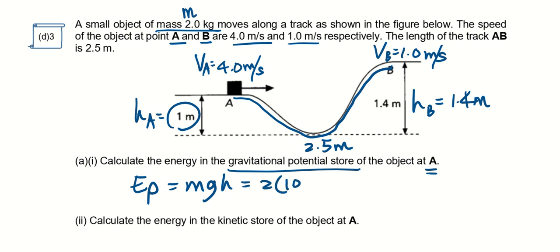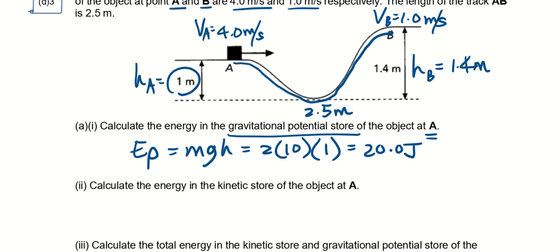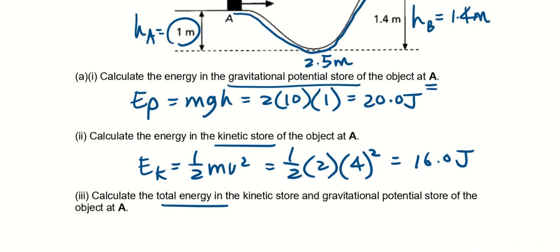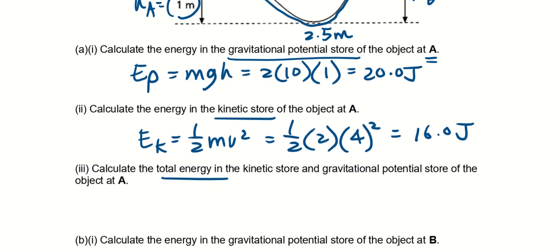Calculate energy in the kinetic store of the object at A, so Ek equals half mv squared, half times 2 times 4 squared, that's the v, so it will be 16 joules. So what's the total energy in both the stores will be 36 joules, you just add them up.